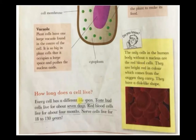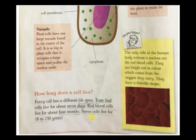Moving on to the last topic — here they have provided information on how long a cell lives. Every cell has a different lifespan. Taste bud cells live for about 7 days. Red blood cells live for about 4 months. Nerve cells live for 18 to 130 years.